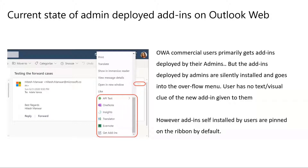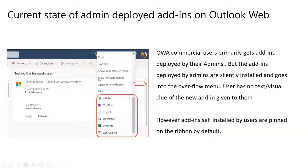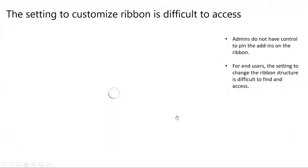What happens today is that whenever an admin gives an add-in to the user, the add-in goes into this overflow menu in Outlook Web, which can be accessed from the small three dots that you see. Be it reading pane, calendar surface, or compose mode, all the admin-installed add-ins go into this overflow here. This leads to a problem where a user has no text or visual clue whether a new add-in has been given to them, and it's not like users don't have control to pin the add-ins, but the setting to do that is also quite difficult to find.